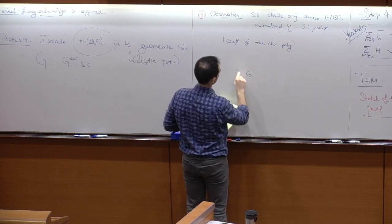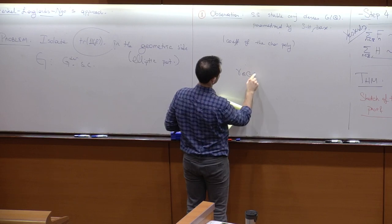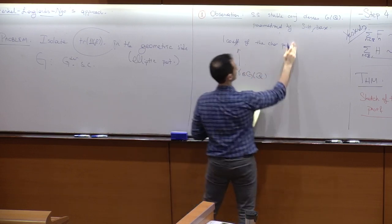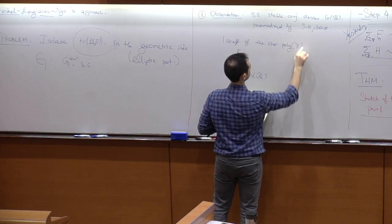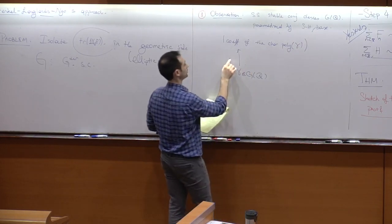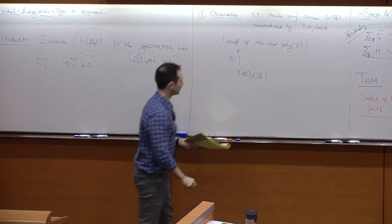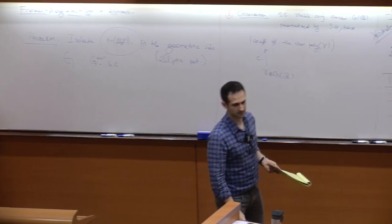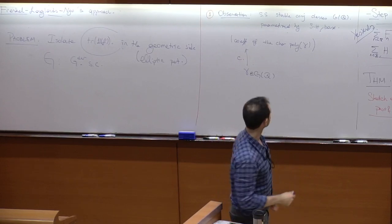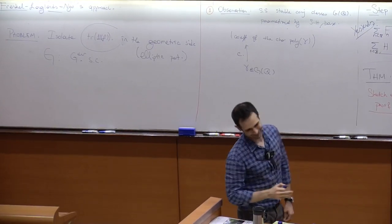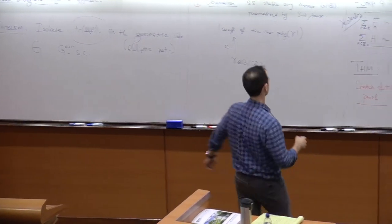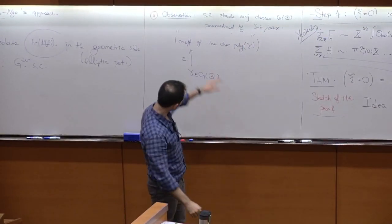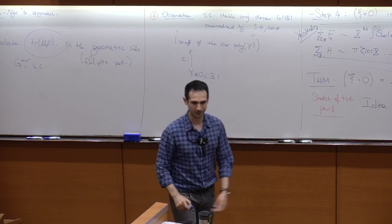So this is the map: for each element gamma in G(Q), we just send it to the coefficients of the characteristic polynomial of gamma. Let me denote this map by C. G is just any group — your favorite group, SL_N if you like. For SL_N, just send it to the space of the characteristic polynomials.